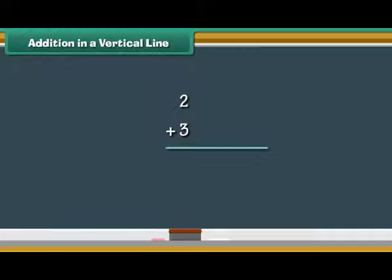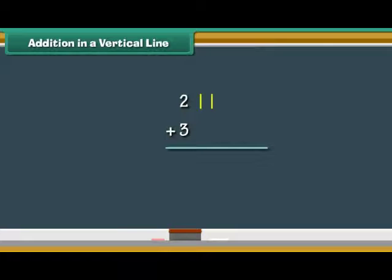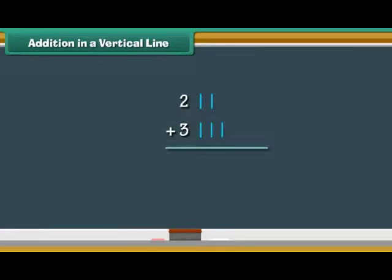Addition in a vertical line. Let us now add numbers vertically. Write the numbers one below the other. To add two and three vertically, draw two vertical lines next to two and three vertical lines next to three. Count the vertical lines: one, two, three, four, five. Therefore, two plus three is five.